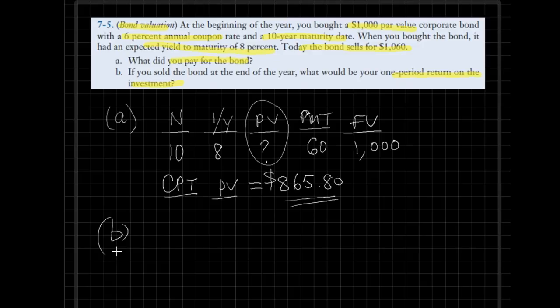Now in the second part of the problem, we need to figure out the one period holding period return for this investment. There are multiple ways to approach this problem. One way would be to use the third row of our financial calculator because we are holding for one year only.